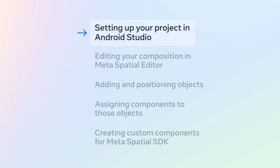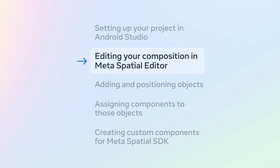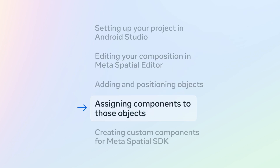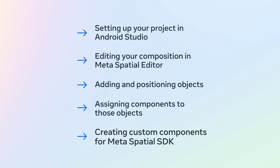This can then be exported into your Spatial SDK projects. In this session, you will learn how to use components to make interactive objects for your Spatial SDK project. We will cover setting up your project in Android Studio, editing your composition in the Meta Spatial Editor, adding and positioning objects, assigning components to those objects, and then previewing your project in a headset. After that, we will explore how to create custom components for the Spatial SDK, allowing you to add unique interactivity to your projects.